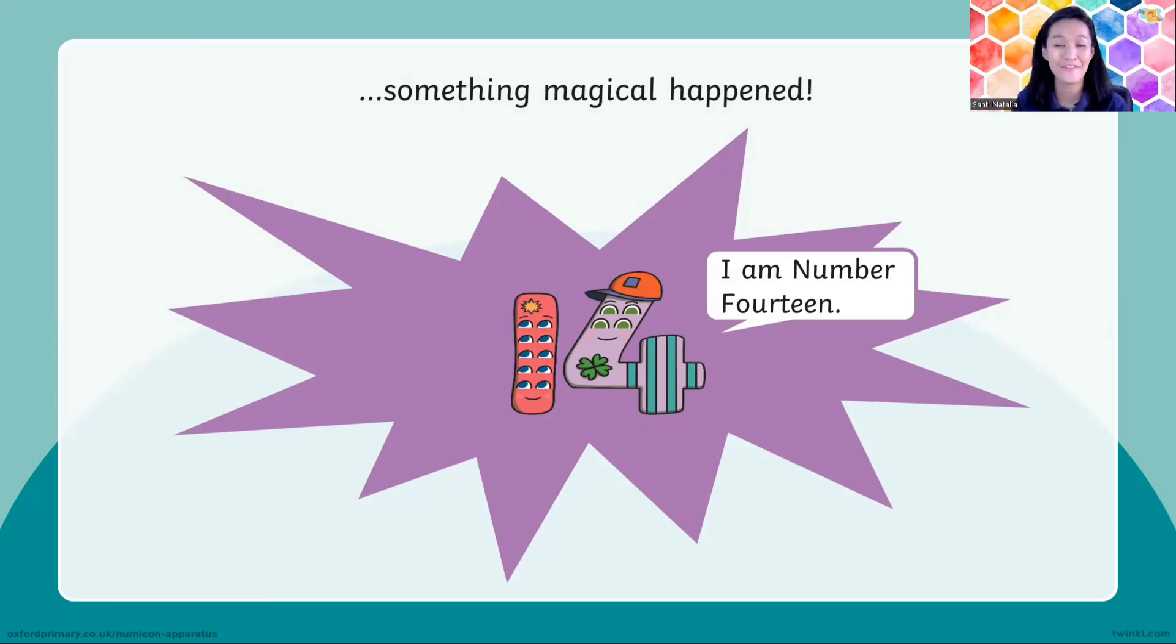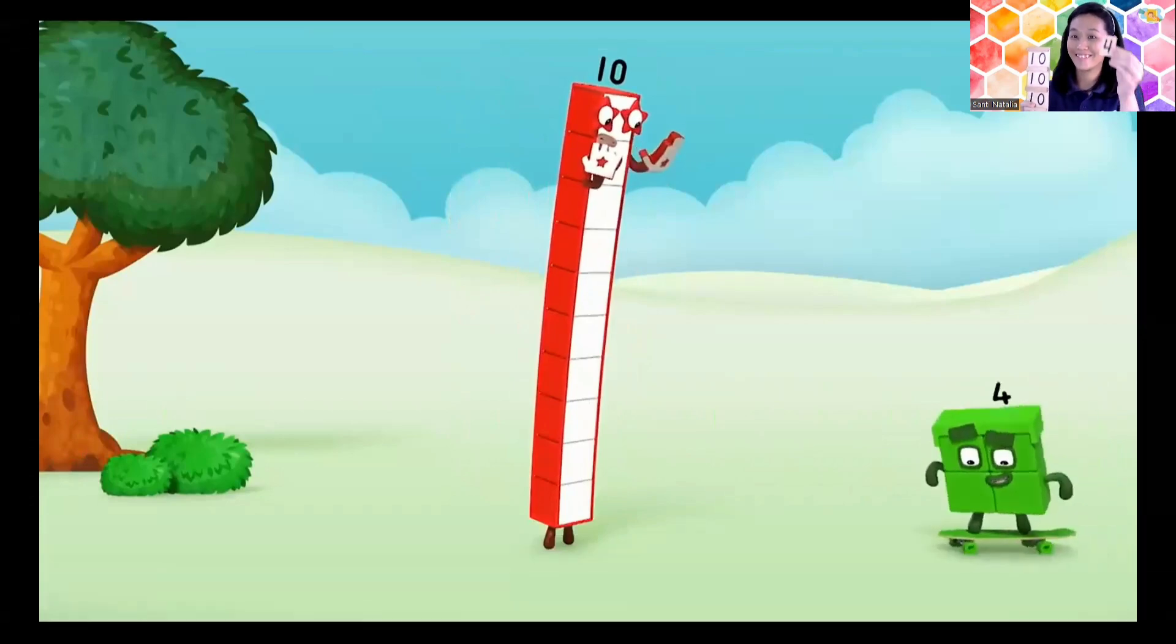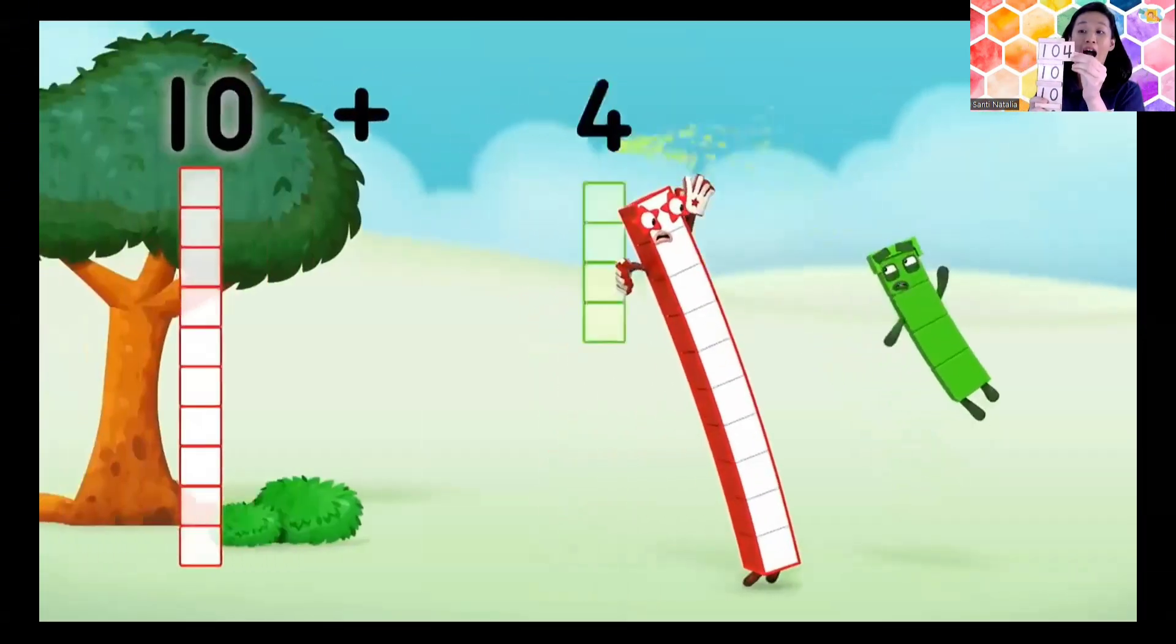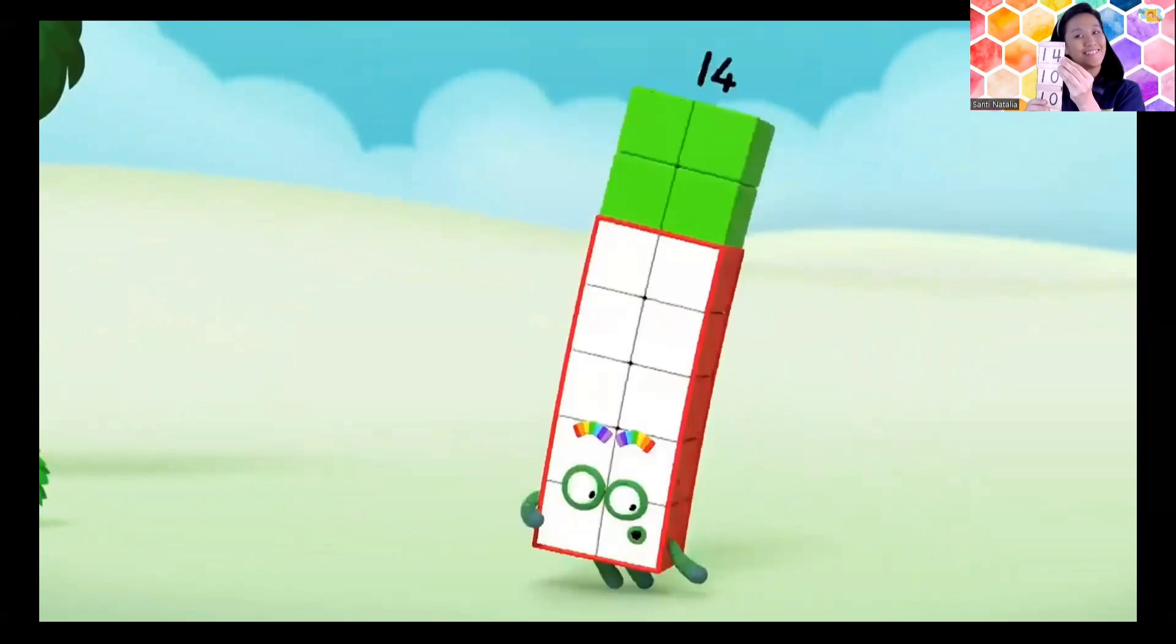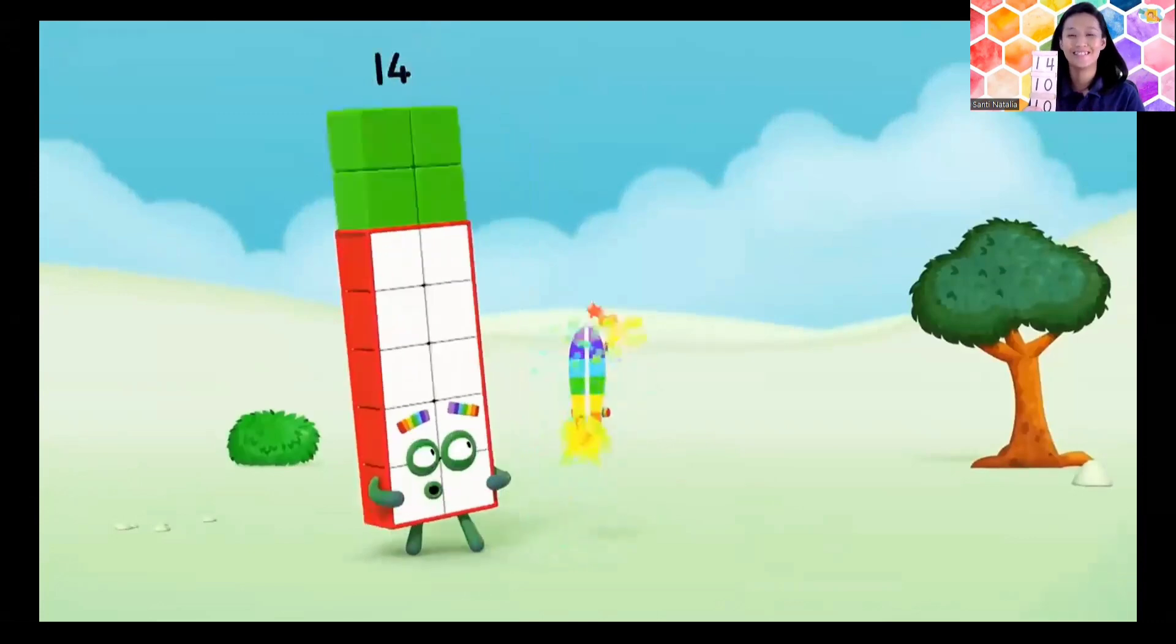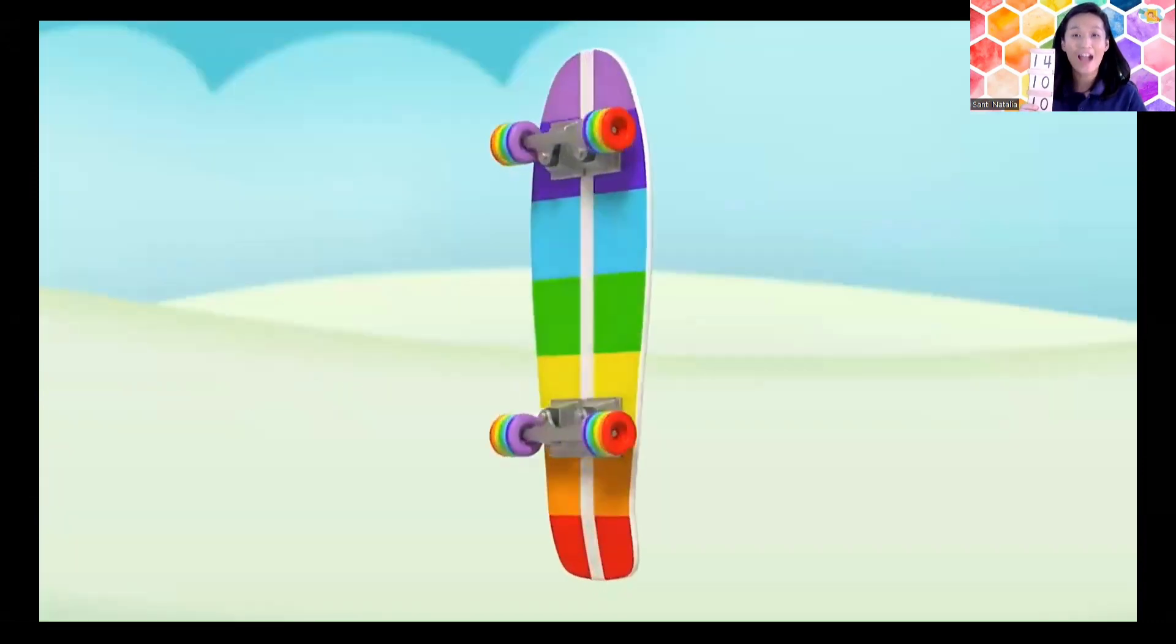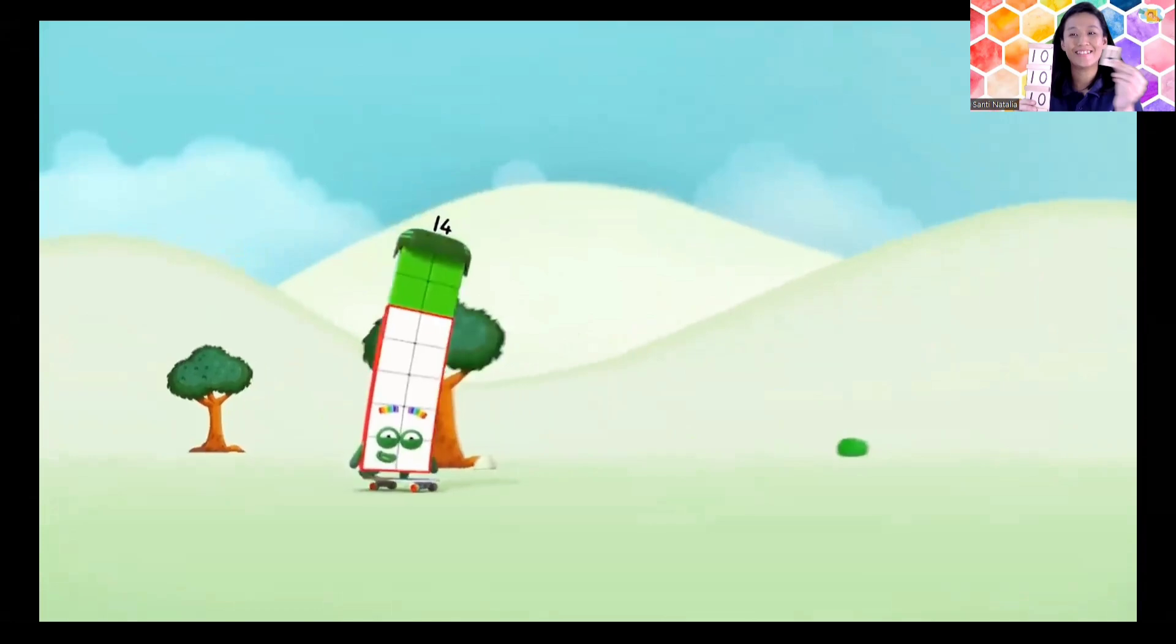Ten and four equals 14, yes. Something magical happened. When you have number 10 and number 4 joined together, we have number 14. Can you say 14? That's good. Now let's call our Number Blocks. Look at my new skateboard. Uh, square wheels. 10 plus 4 equals 14. Whoa, I'm a totally new number dude. Check it out. Sweet stripey skateboard. I am 14 and I live to skate.